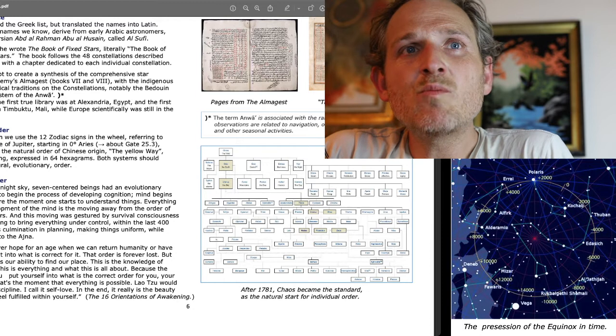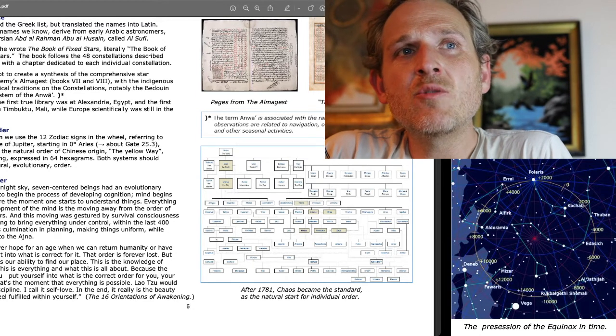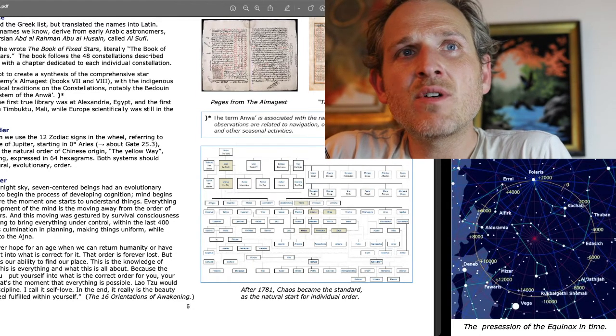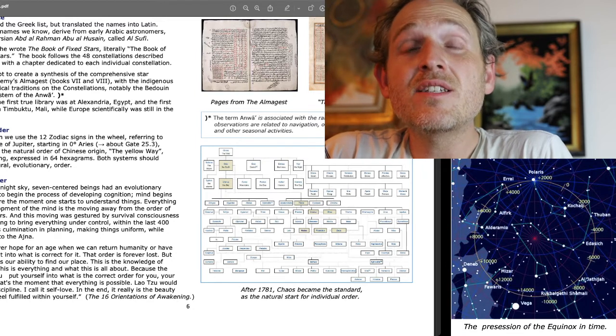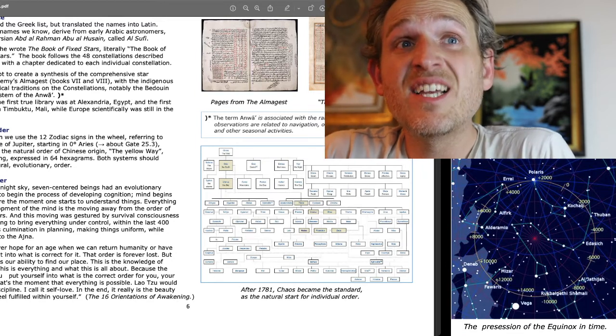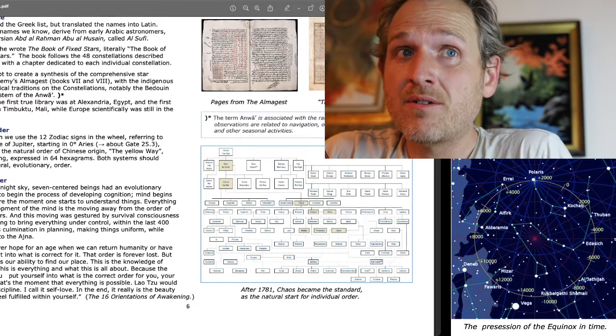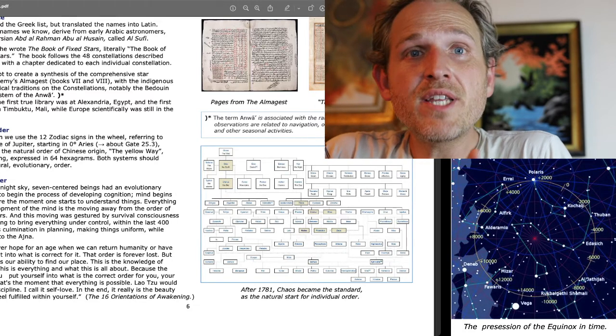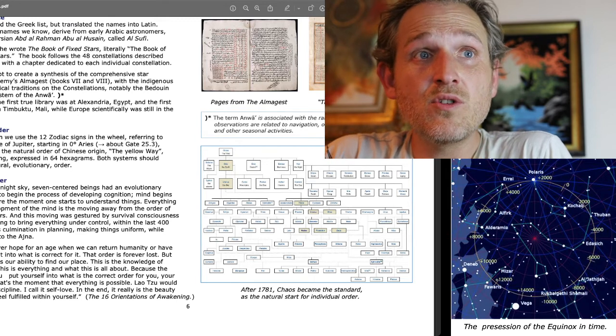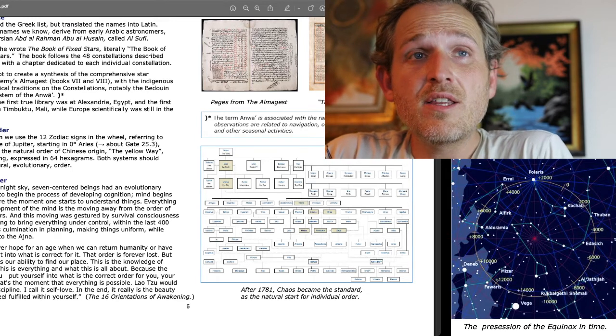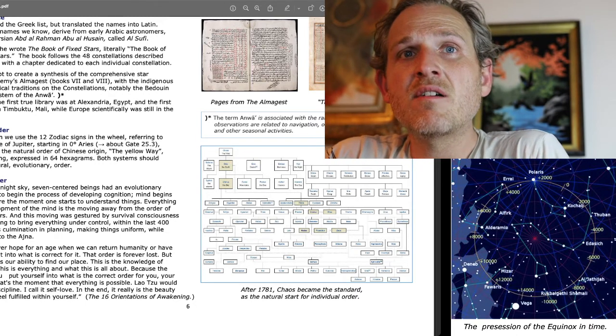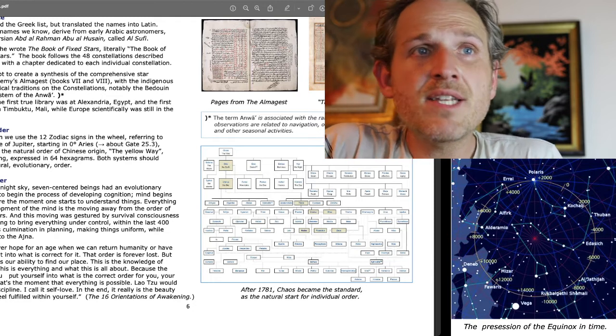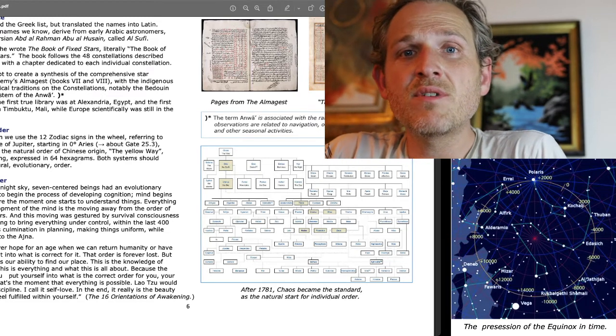Ra: We can't ever hope for an age when we can return humanity, or have humanity truly fit into what is correct for it. That order is forever lost. But what is not lost is our ability to find our place. This is the knowledge of differentiation. This is everything, and what this is all about. Because the moment that you put yourself into what is the correct order for you, your natural order, that's the moment that everything is possible. Lao Tzu would have called it discipline. I call it self-love. In the end, it really is the beauty of what it is to feel fulfilled within yourself.